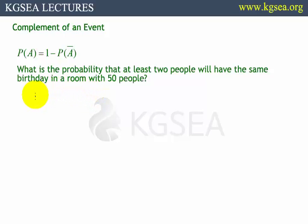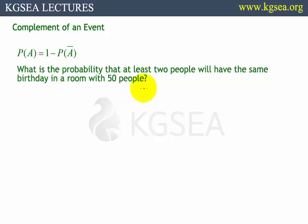I would like to solve perhaps the most famous complement of an event problem. If there are 50 people in the room, what's the chance that two people would share the same birthday? This is not about the same year, but same birthday only.